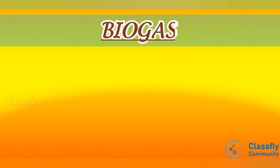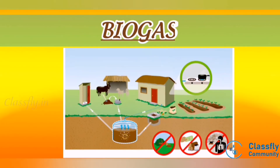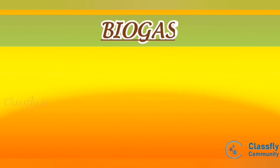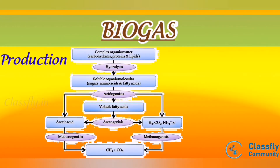Biogas typically refers to a mixture of different gases produced by the breakdown of organic matter in the absence of oxygen. Microbially controlled production of biogas is an important part of the global carbon cycle. It is a renewable energy source. The main raw material for production of biogas is plant and animal biomass. Biogas is produced as landfill gas (LFG), which is produced by the breakdown of biodegradable waste inside the landfill due to chemical reactions and microbes, or as digester gas produced inside an anaerobic digester.